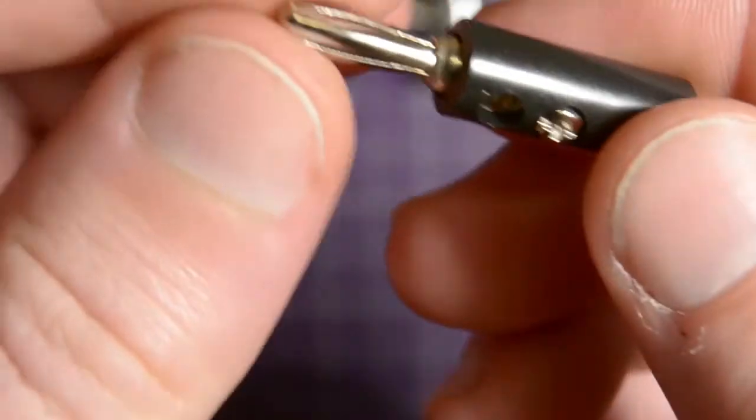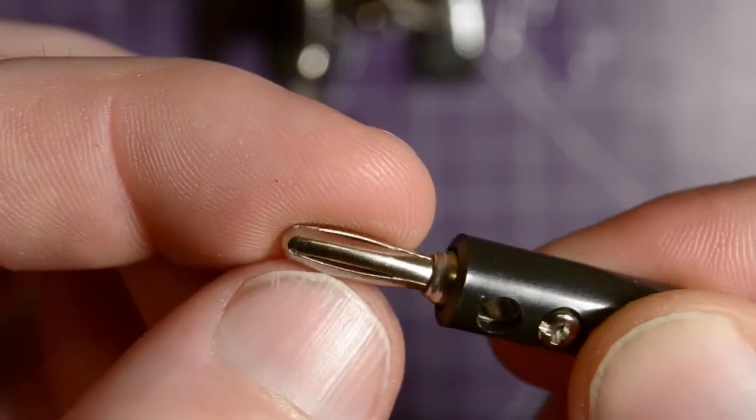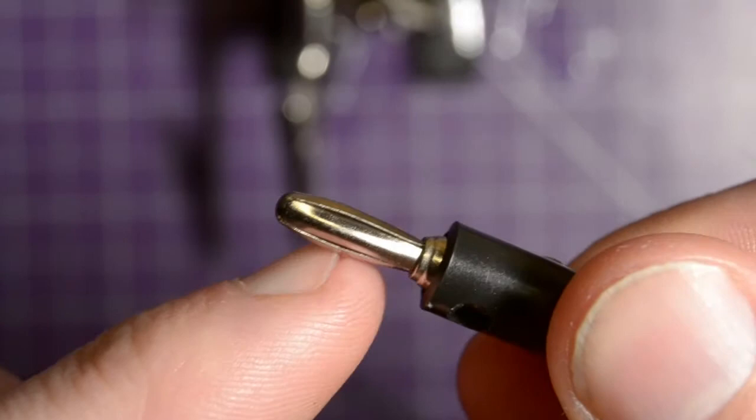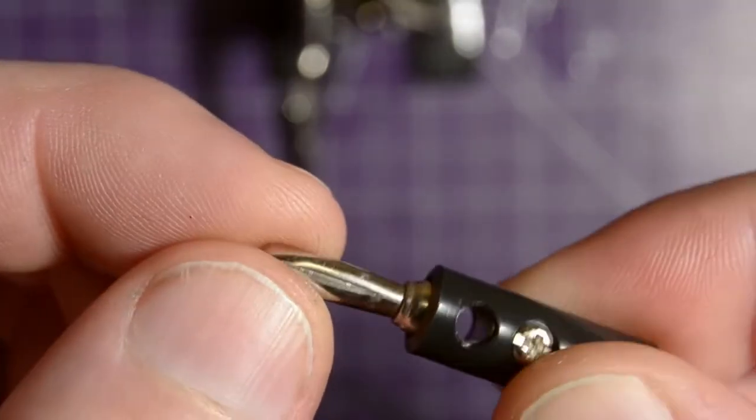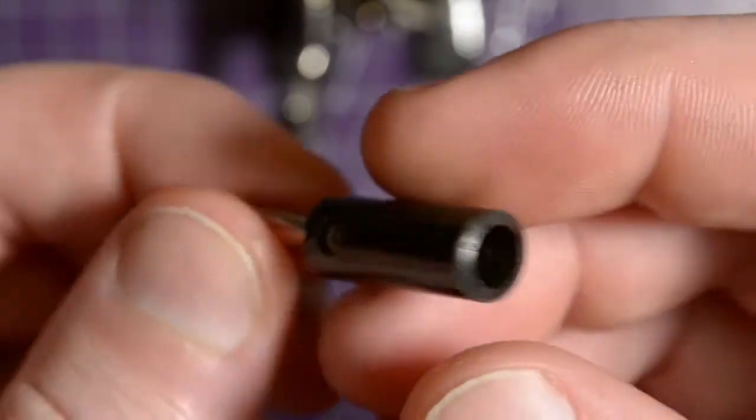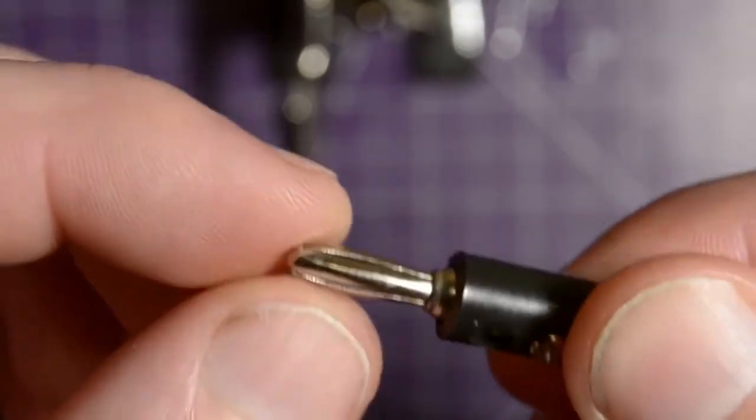Instead you should be getting this type. You see how the banana plug is actually just folded metal? So there's no actual break between the springs that's supposed to tension on the sides of the receptacle and the actual metal contact.